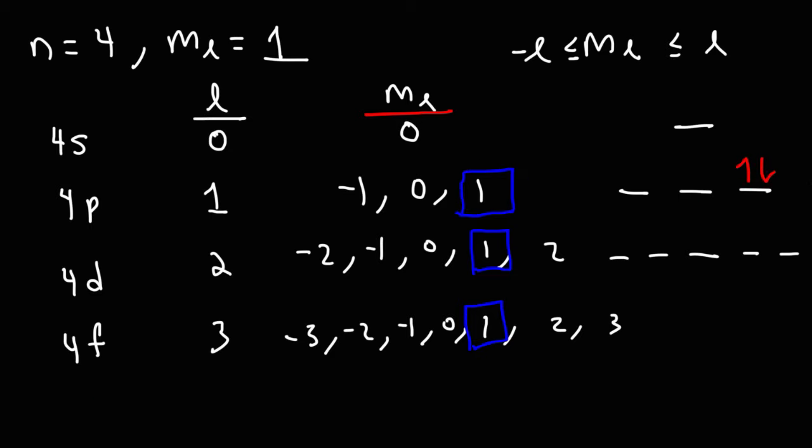Let's go back to three quantum numbers. If n is 3, l is 1, and the electron spin is plus one-half, how many electrons can have these three quantum numbers? When n is 3 and l is 1, we're dealing with the 3p sublevel. There are 6 electrons at most in the 3p sublevel, but how many have a spin of positive one-half? Those are only the up arrows, so there are only 3 electrons that contain these three quantum numbers.